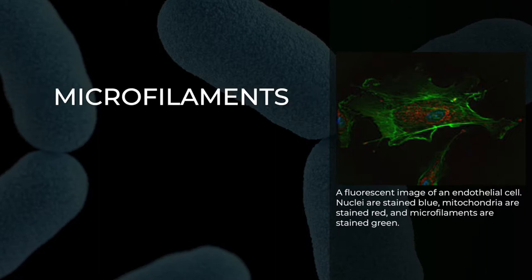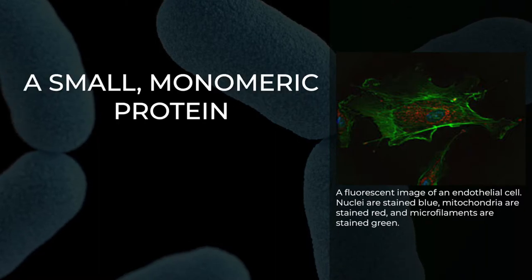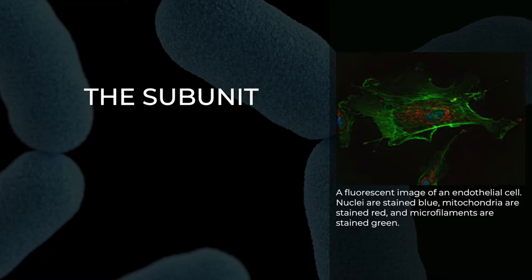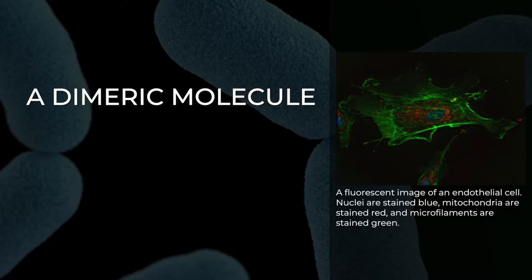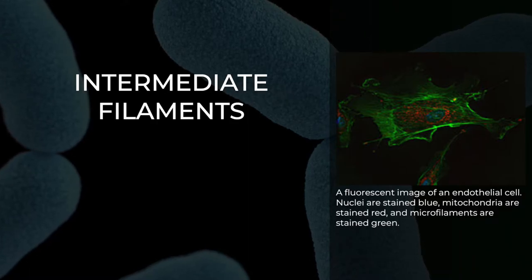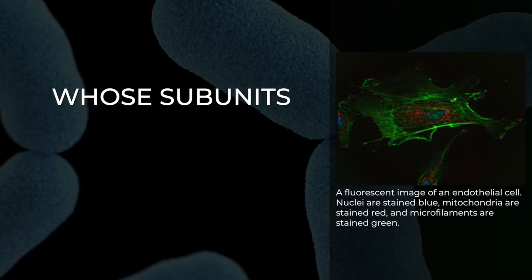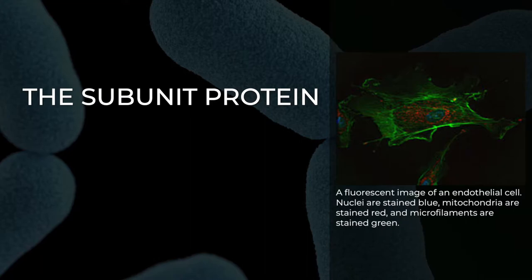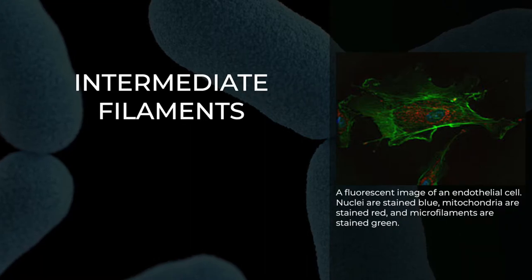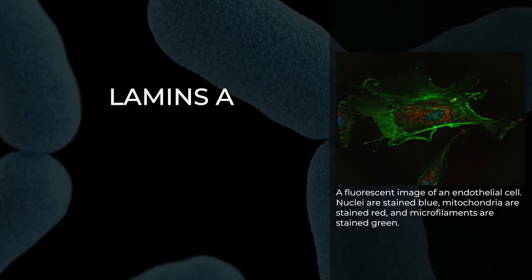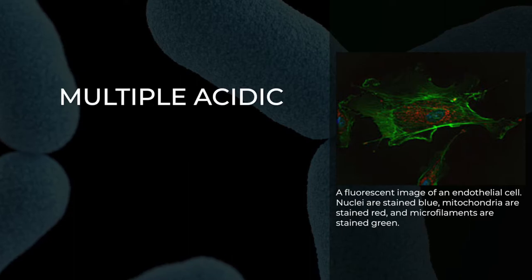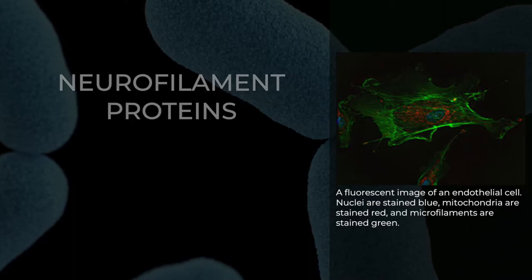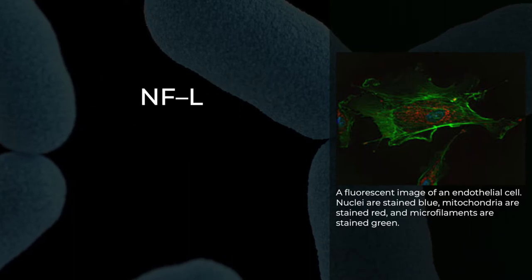The subunit protein of microfilaments is a small, monomeric protein called actin. The subunit of microtubules is a dimeric molecule called tubulin. Intermediate filaments are heteropolymers whose subunits vary among the cell types in different tissues. But some of the subunit protein of intermediate filaments include vimentin, desmin, lamin, lamins A, B and C, keratin, multiple acidic and basic keratins, neurofilament proteins, NFL, NFM.